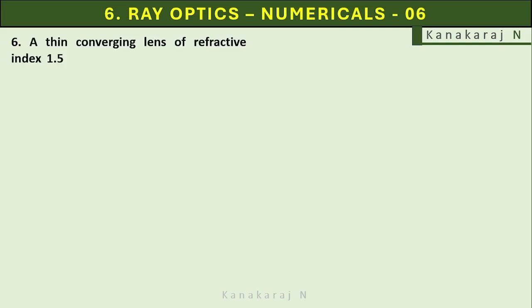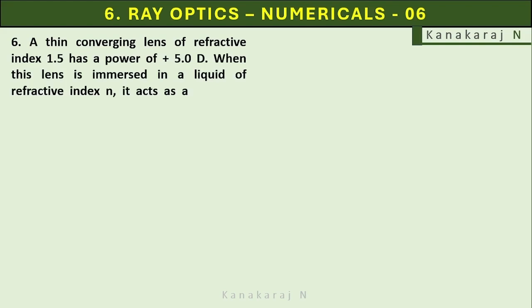A thin converging lens of refractive index 1.5 has a power of plus 5.0 diopters. When this lens is immersed in a liquid of refractive index n, it acts as a divergent lens of focal length 100 centimeters. What must be the value of n?